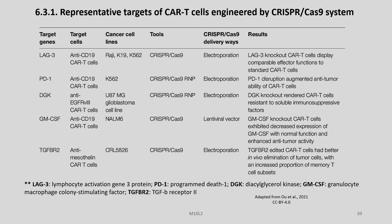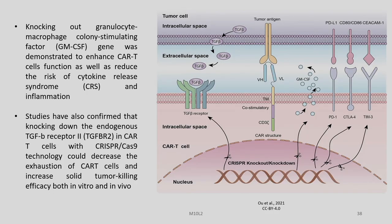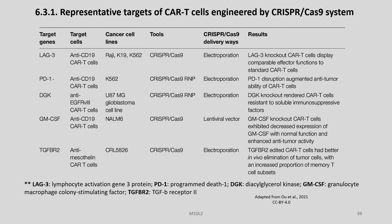Representative targets of CAR T-cells engineered by CRISPR-Cas9 system: we can see various genes like LAG-3, PD-1, DGK, GM-CSF, and TGF-betaR2, and the corresponding target cells: anti-CD19 CAR T-cells, anti-CD19 CAR T-cells, anti-EGFRvIII CAR T-cells, anti-CD19 CAR T-cells, and anti-mesothelin CAR T-cells respectively.